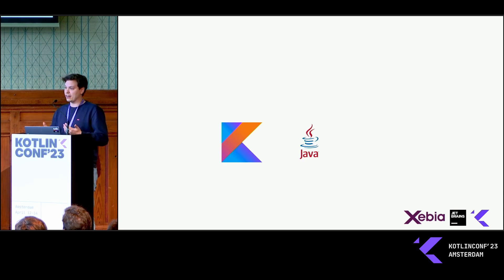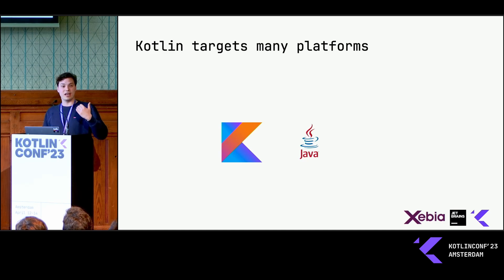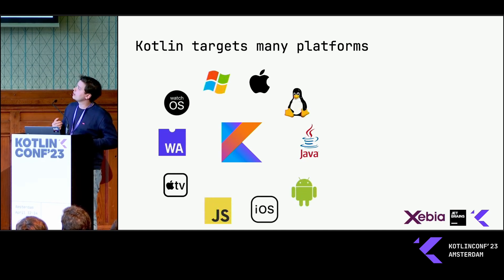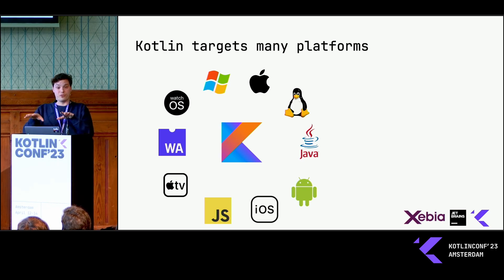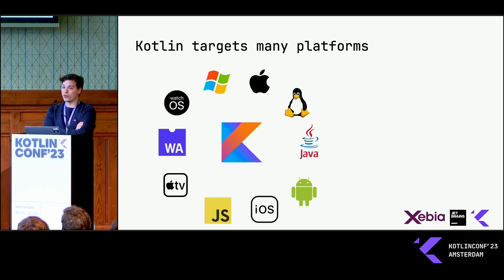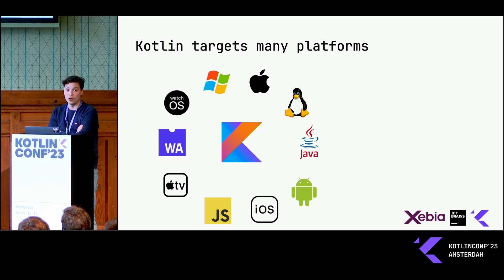But over the years, and I've seen many talks here today as well, Kotlin came to target many, many more platforms. Here is a nice example of a few. You see, for example, Wasm — one thing I'm really looking at at the moment — but also iOS. So you can have the code base for apps on both platforms, but also more of the native ones: Linux, macOS, or Windows.